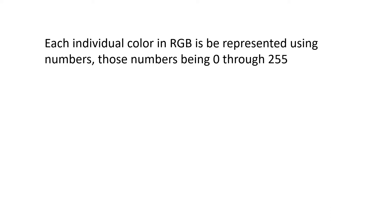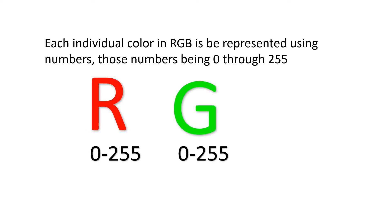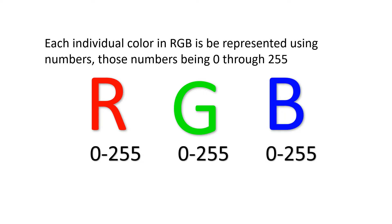Each individual color in RGB is represented using numbers, those numbers being 0 through 255. So the color red has the potential value of 0 to 255, green has the potential value of 0 to 255, and blue also has that same potential value of 0 to 255.